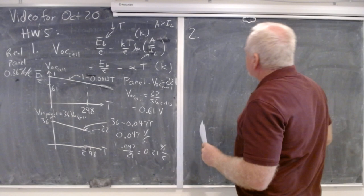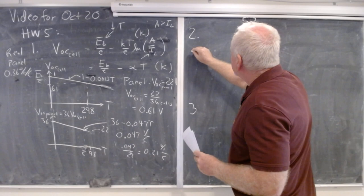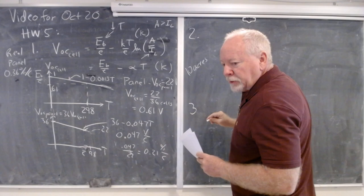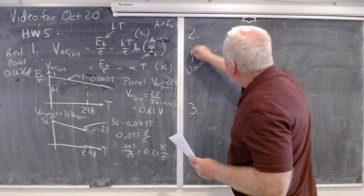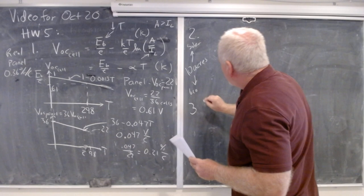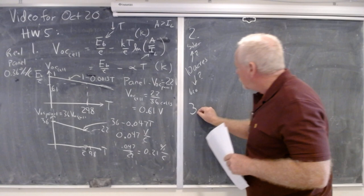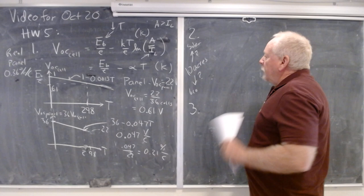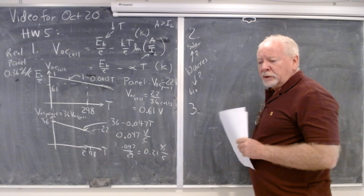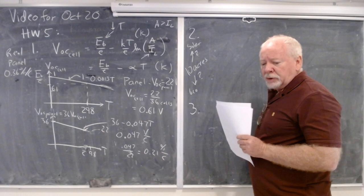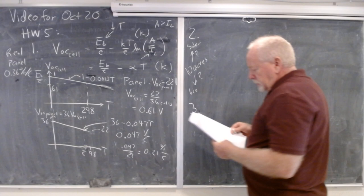Problem 2 asks: you have 10 acres — solar or bio? It leads us into our discussion of biofuels and biomass. The question is what do you do with your 10 acres to make money from energy. Realistically you'd grow food on arable land, but this problem asks: in the future if we have to make energy, which way do we go? For solar you need to figure out panel spacing so they're not shaded.